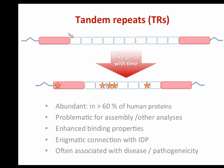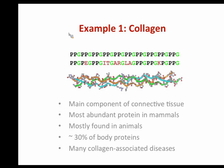Tandem repeats have been noticed in relation to associations with diseases and pathogenicity. Therefore, some four or five years ago, we applied a program to study how these genomic features evolve and what are their functional roles. Let's start from some examples. One of the very common, well-known examples is collagen.